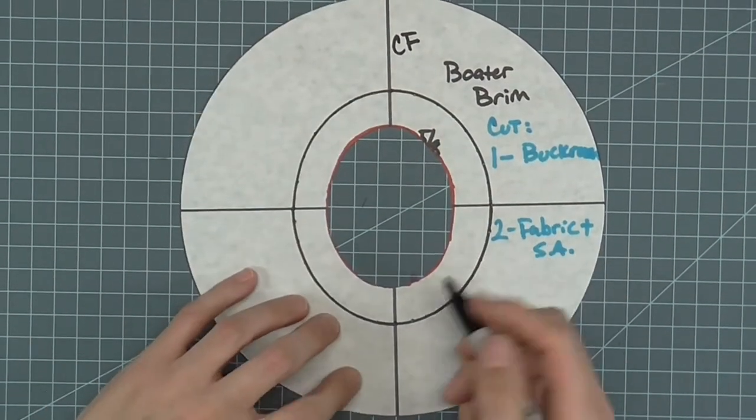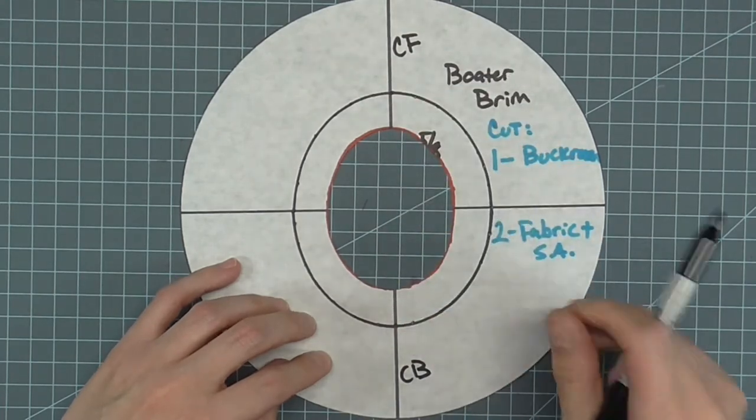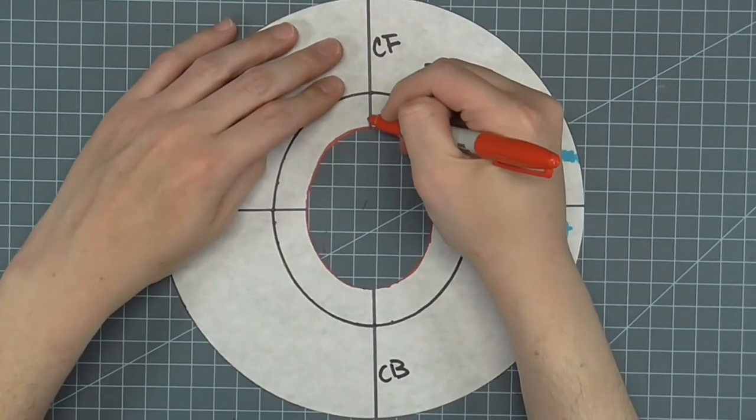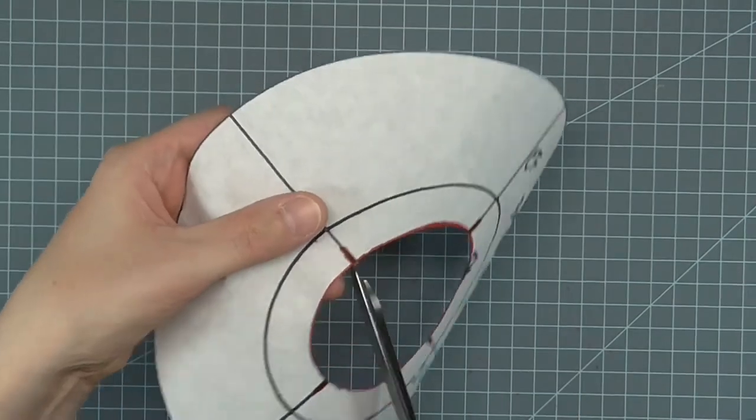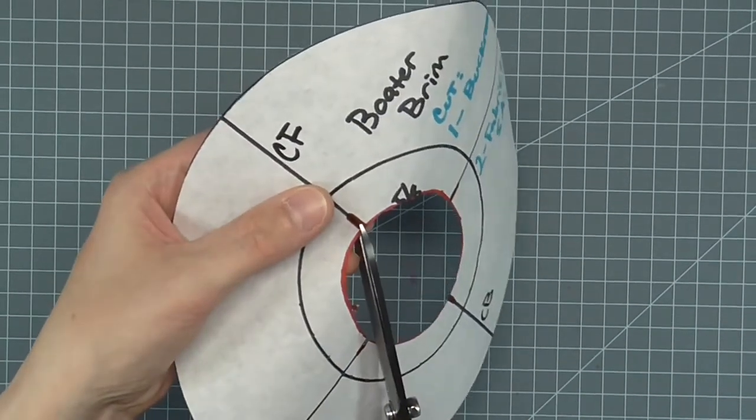Label the long ends of the brim center front and center back. Mark notches on the axis lines at the seam allowance edge. Notch or clip the inside axis lines on the seam allowance.